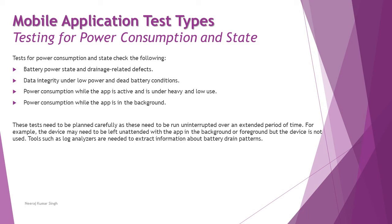At a minimum, the current ongoing event may be lost, but progress should not be. These tests need to be planned carefully as they must run uninterrupted over an extended period of time — for example, the device may need to be left unattended with the app running in the background or foreground without being used. Tools such as a log analyzer are needed to extract information about battery drain patterns, as this cannot be done manually.